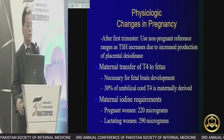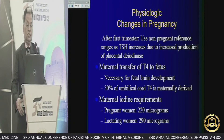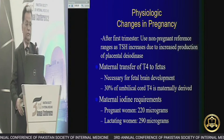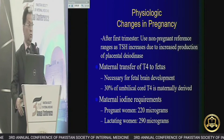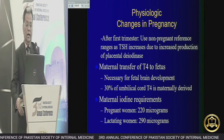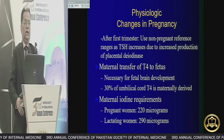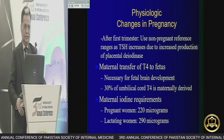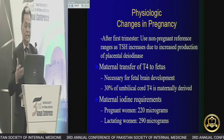Maternal transfer of T4 to the fetus is necessary for fetal brain development. About 30% of umbilical cord T4 is maternally derived. In the first trimester, the fetal thyroid gland is not developed, so T4 transfer is especially important in the second and third trimesters.